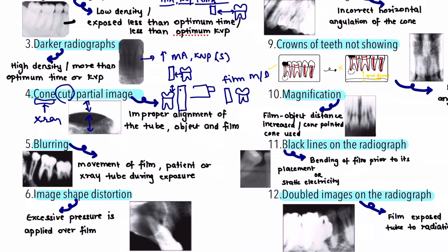The sixth error is image shape distortion, which can be due to excessive pressure applied over the film. When the patient holds the film with a finger and applies too much pressure, the film can bend at the center, distorting the image of the tooth. The correction is that the film should be supported very gently so that it does not bend.